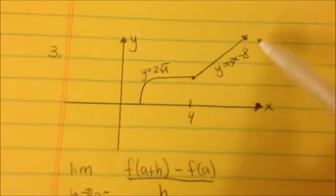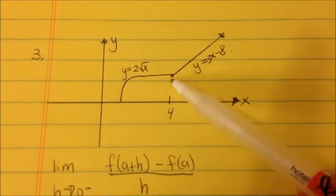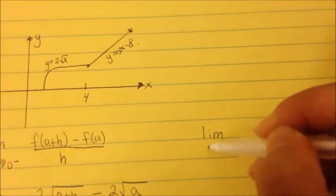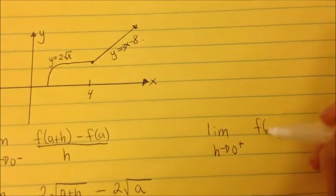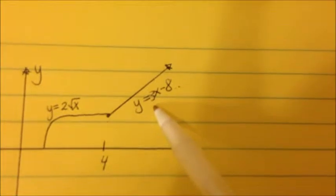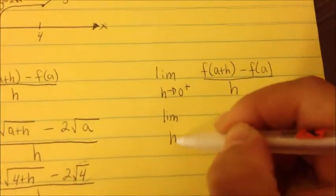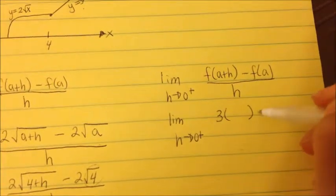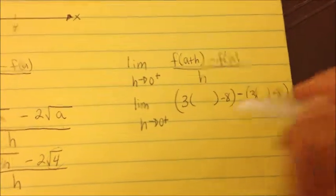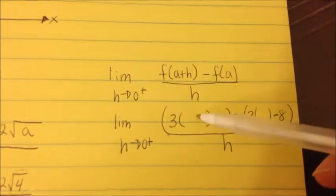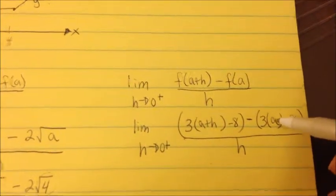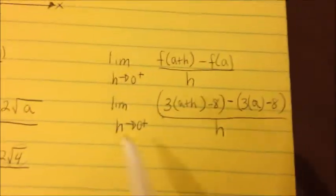Now let's do the right-hand side to check differentiability at x equals 4. The limit as h approaches 0 from the right-hand side. Writing the general equation again, the equation to mimic on the right is 3x minus 8. So we write the limit as h approaches 0 from the right of 3x minus 8, minus 3x minus 8, all over h — substituting a plus h in the first parentheses and a in the second.